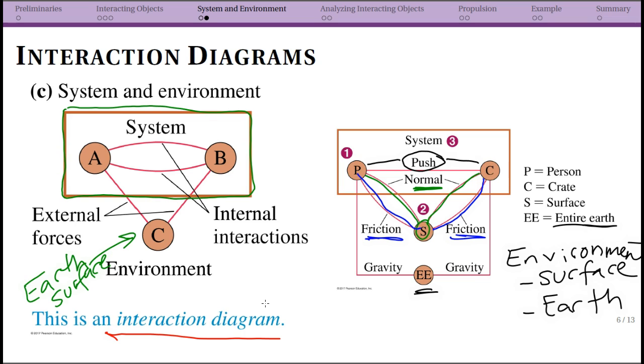And then because gravity is separate—so I'm sorry, the earth—note the EE here is for entire earth—that you then have a gravity interaction as well. So those are the three forces that I said each of my objects has that is actually due to the environment, and then you have one force which is due to them interacting with each other.